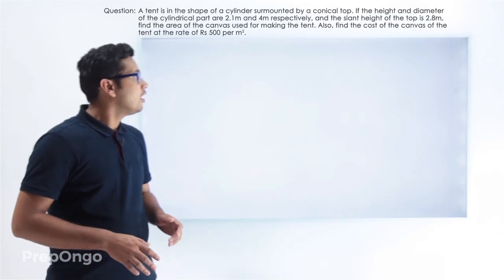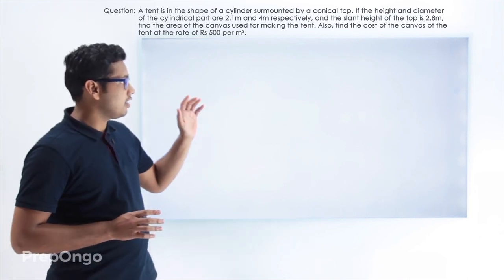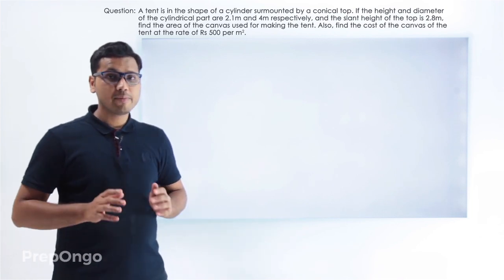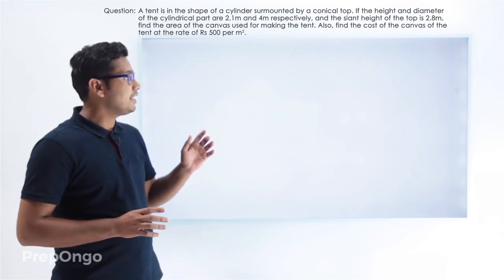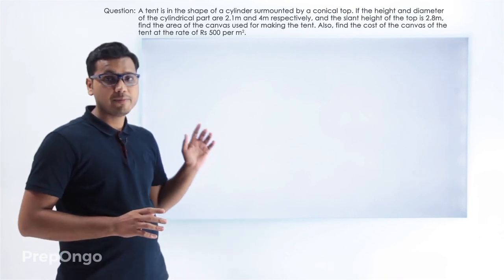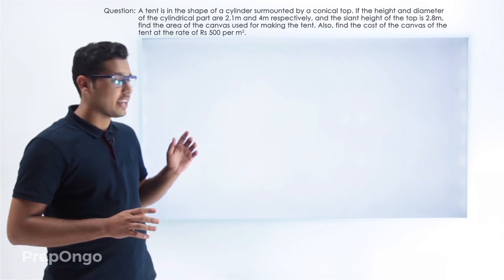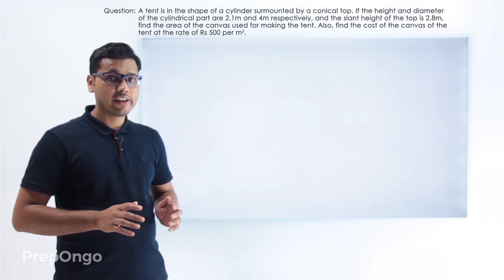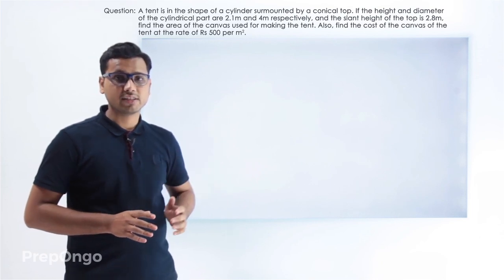Let us have a look at this question. This question says that we have a tent which is in the shape of a cylindrical base surmounted by a conical top. The diameter and height of the cylinder are 4 meters and 2.1 meters respectively. If the slant height of the conical top is 2.8 meters, then we have to find out the total canvas area which has to be used to make this tent, and we also have to find out the cost of the canvas if it costs 500 rupees per meter square.